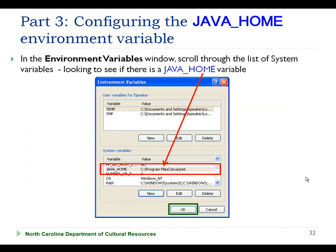Then we will return to the Environment Variables window, scroll through the list of system variables one more time, and we now see that the JAVA_HOME environment variable is set. Once you've got it set, go ahead and click OK to close this window, and that completes the configuration of the JAVA_HOME environment variable. Let's now switch over to my computer to see how we would do this.